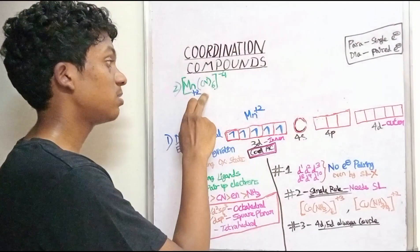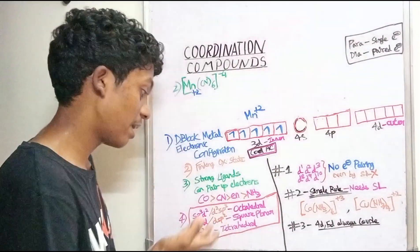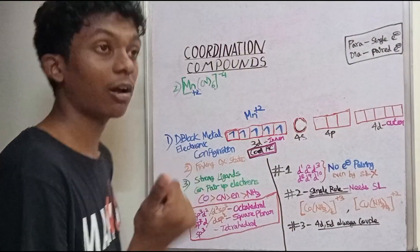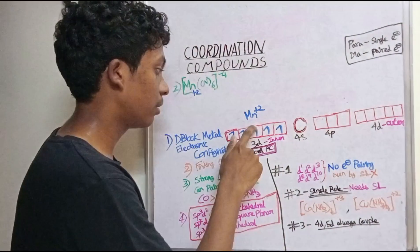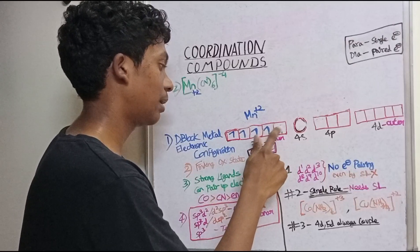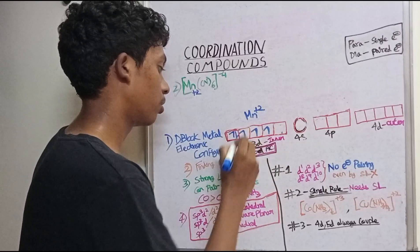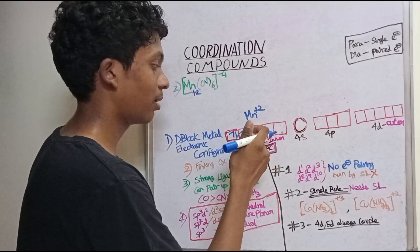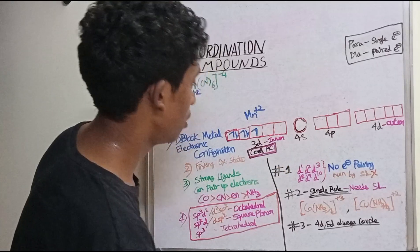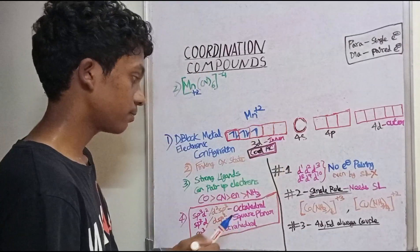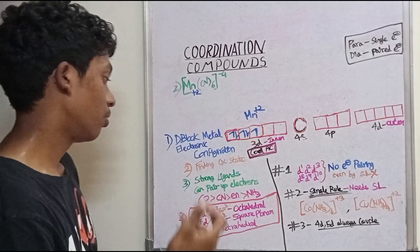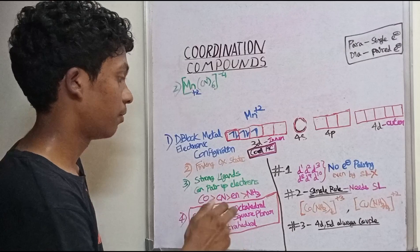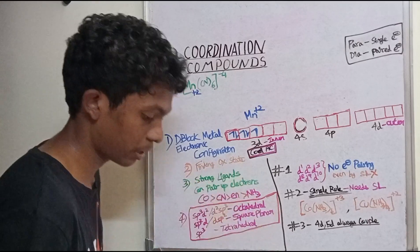Now we consider the ligand. CN₆ is a strong ligand. Since it is a strong ligand, we apply the pairing rule. We take this single electron and pair it here, and this single electron gets paired here as well.